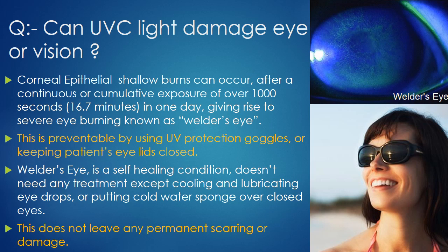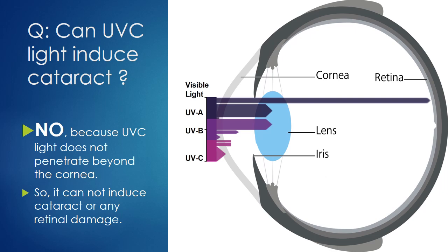Can UVC light damage the eye or vision? Corneal epithelial shallow burns can occur after continuous or cumulative exposure of over 1,000 seconds — 16.7 minutes — in one day, giving rise to severe eye burning known as welder's eye. This is preventable by using UV protection goggles or keeping the patient's eyelids closed. Welder's eye is a self-healing condition that doesn't need any treatment except cooling and lubricating eye drops or cold water sponges over closed eyes, and does not leave any permanent scarring. Can UVC light induce cataract? No — because UVC light does not penetrate beyond the cornea, so it cannot induce cataract, retinal damage, or any other internal damage to the eye.